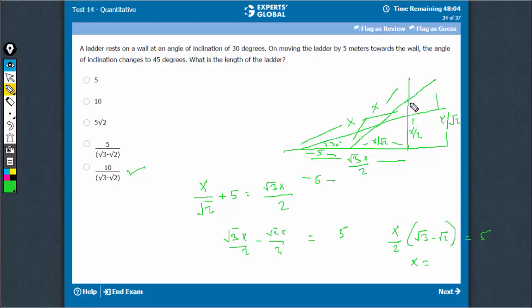So, hypotenuse is still x. Therefore, these two became x upon root 2 and x upon root 2. x upon root 2 plus 5 is equal to the original base which is root 3 x upon 2. This is the main part, then the rest is just solving it for x.